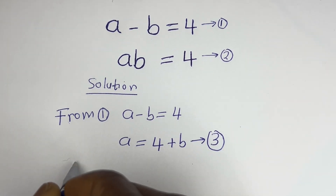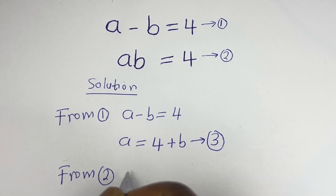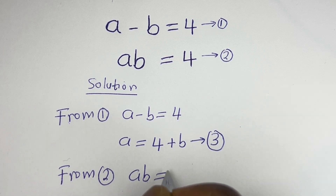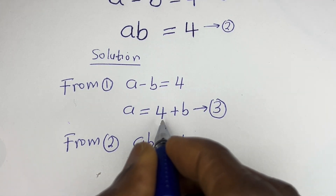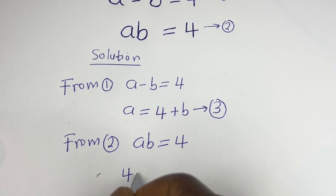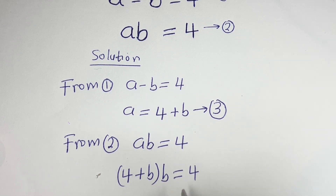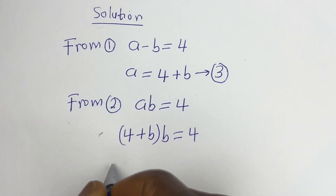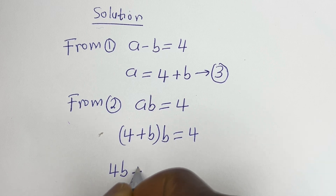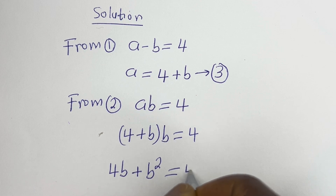From equation 2, a b is equal to 4. We can now substitute for a: we have (4 plus b) times b is equal to 4. Let's open the bracket: 4 multiplied by b is 4b, plus b multiplied by b is b squared, equals 4.